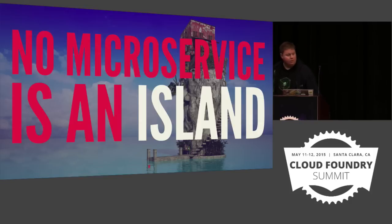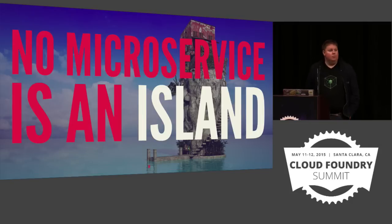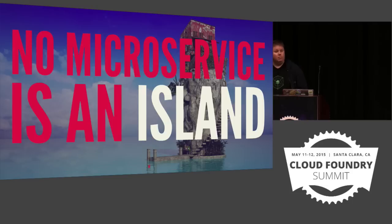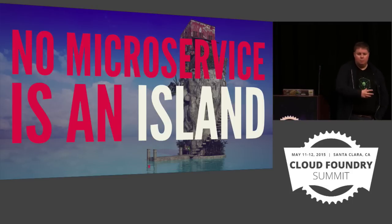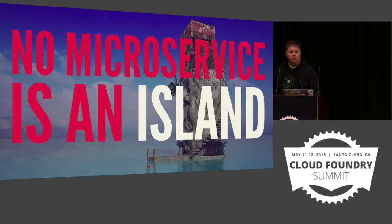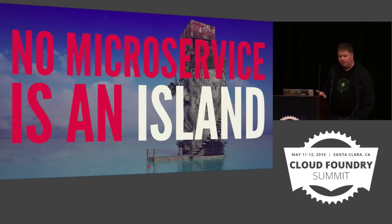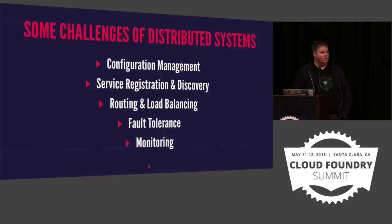Dave Syer, who works on the Spring Cloud project, made this statement at Spring One last year: no microservice is an island. It doesn't matter if we can build small services — it's good, but not enough. Being able to build them, deploy them, run them, and keep them running is good, but not enough. Because as soon as we start to decompose a monolith and put network boundaries between the things we're building, we start to create these nasty things called distributed systems — and distributed systems are hard.